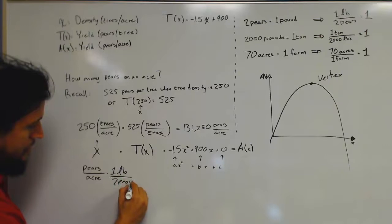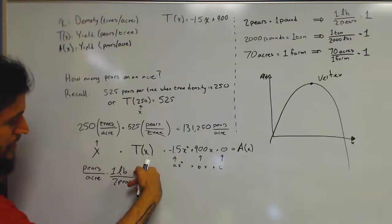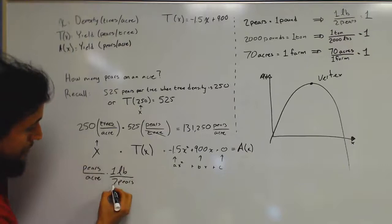Now, it is important whether this is flipped or not. I could have written this as two pairs over one pound, but that would not make sense because I would end up with pairs squared on top. Our goal is to get these to cancel. We want the pairs to disappear. Our end result should end up with just something in terms of tons for the entire farm.